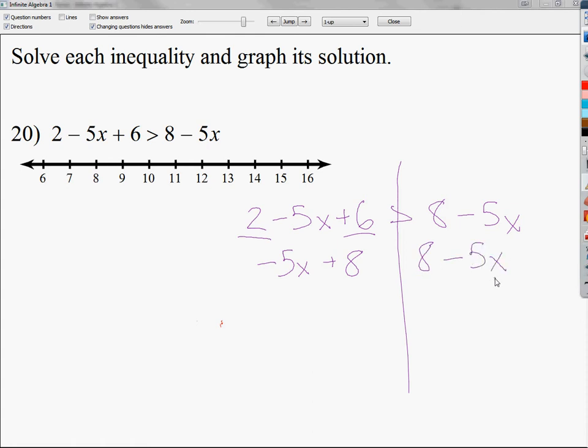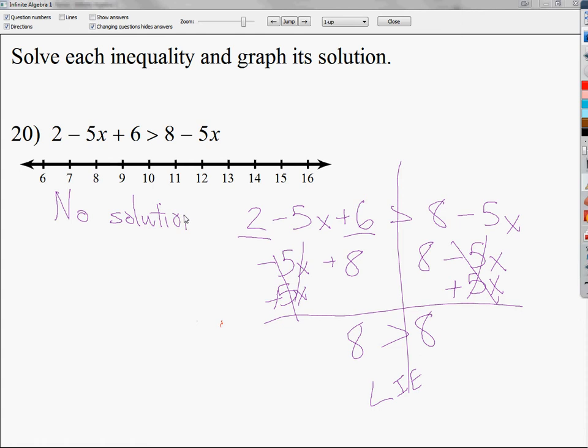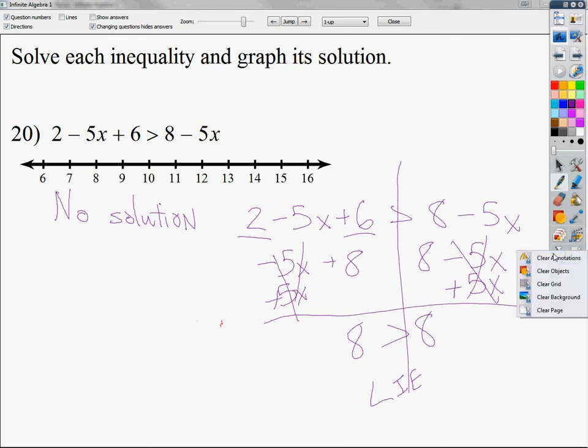Then it's sort of like pork chops and applesauce. So I'm going to move my 5x over or get rid of it on the right side by adding 5x. These cancel and so do these. So what I'm left with is 8 and 8. I'm going to bring down my inequality because I haven't done anything to make me flip it over. It says 8 is greater than 8. Well, 8 can't be greater than 8. So this would be a statement that is a lie. And thus my answer is no solution.